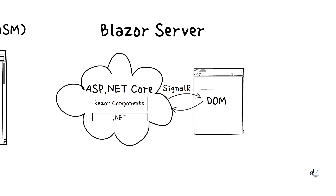This model provides more security since it doesn't send the application code to the client. Note that if you plan on building an application with millions of concurrent users — like Twitter or Facebook — scaling the application appropriately will be an additional concern to address when using Blazor Server.